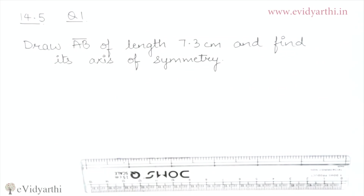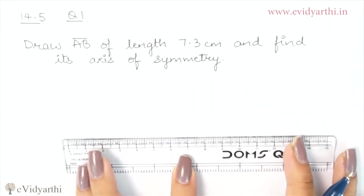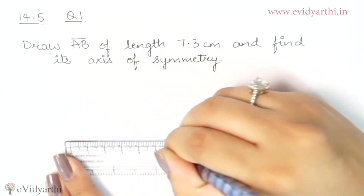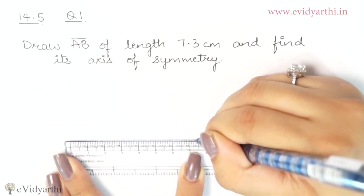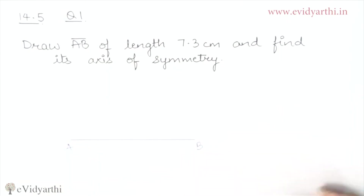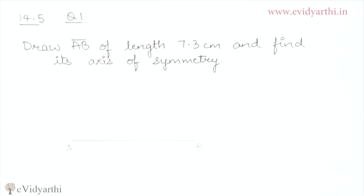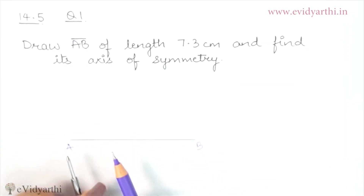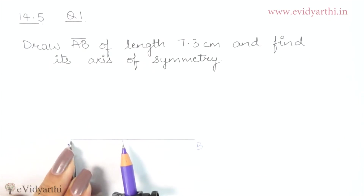Now we have understood the question. First, we have to draw AB of 7.3 cm. We will use our ruler and draw a line segment which is 7.3 cm. Now we will name it AB. We will open the compass to more than half of AB — so the compass opens from point A past the midpoint.